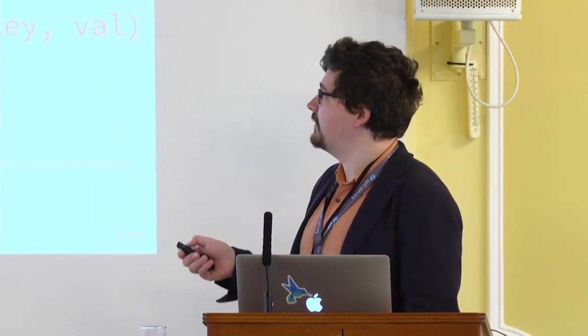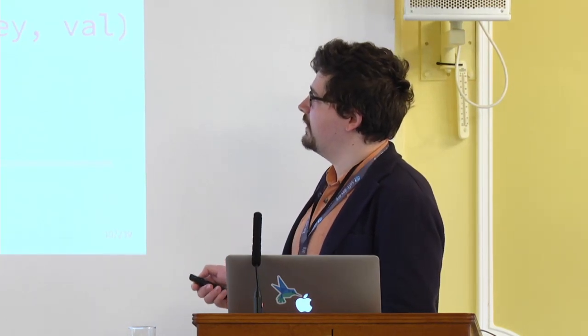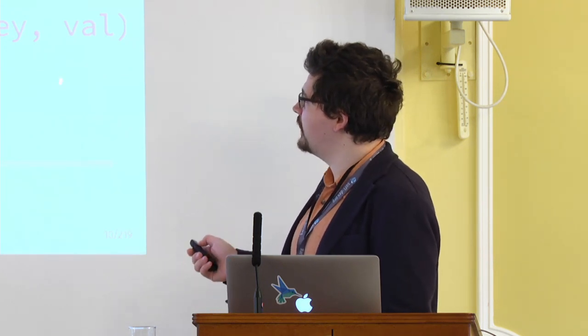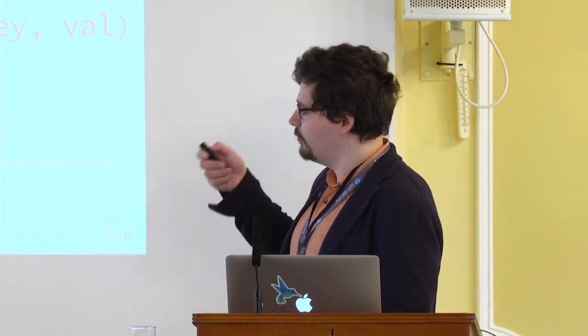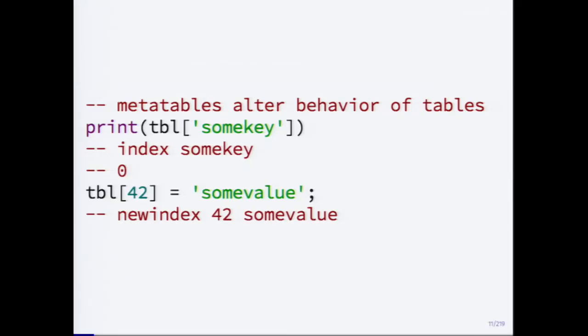For example, here I say that when you try to get a key from the table, it will print the key and always return zero. And here I say that when you try to associate a key with a given value, it will just print this and do nothing else. So if you try to index some key, you get printed 'index some_key' and then zero. And if you try to assign 42 to 'some_value', it will print 'newindex 42 some_value'. Very trivial, very simple.